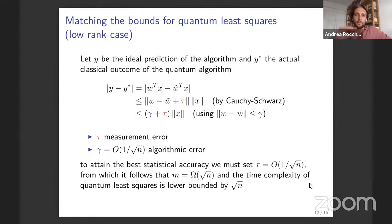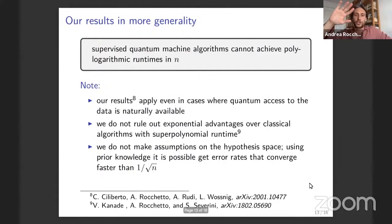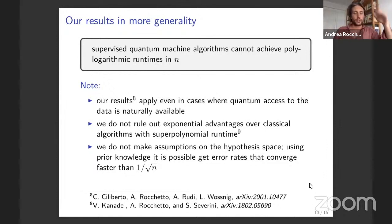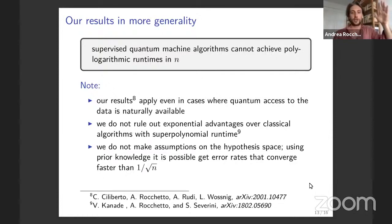Let me give you a general statement of our results in full generality. In a nutshell: if you consider the statistical properties of estimators and the best error achievable with a given number of samples, supervised quantum machine learning algorithms cannot achieve polylogarithmic run times in N.